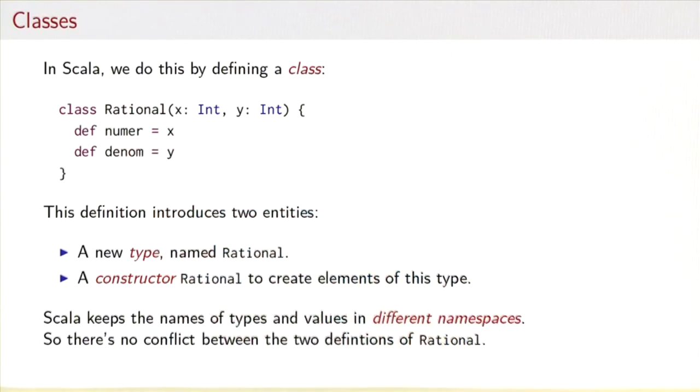One is called numer and it's the same as the x argument, and the other is called denom and it's the same as the y argument. What that definition introduces is two entities: a new type named Rational and also a way to construct rationals to create elements of this type. The way to construct is encapsulated in a constructor.